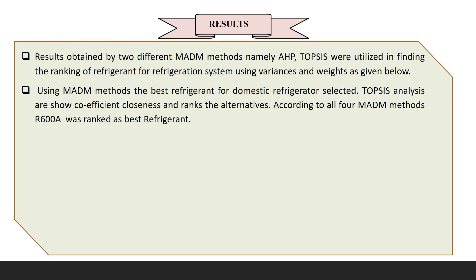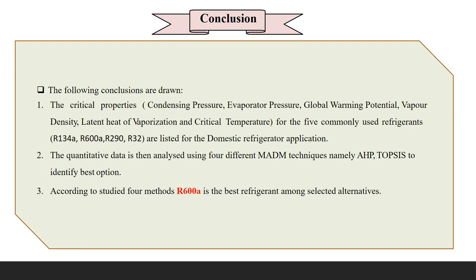Using two MADM methods — AHP (Analytical Hierarchy Process) and TOPSIS — we got R600A as the best refrigerant for the domestic refrigerator. In conclusion, we took critical properties of the refrigerant like condensing pressure, evaporator pressure, global warming potential, vapor density, latent heat of vaporization, and critical temperature. For these five critical properties we evaluated refrigerants R134A, R600A, R290, and R32, and from both MADM methods we confirmed that R600A is the best refrigerant among the selected alternatives.